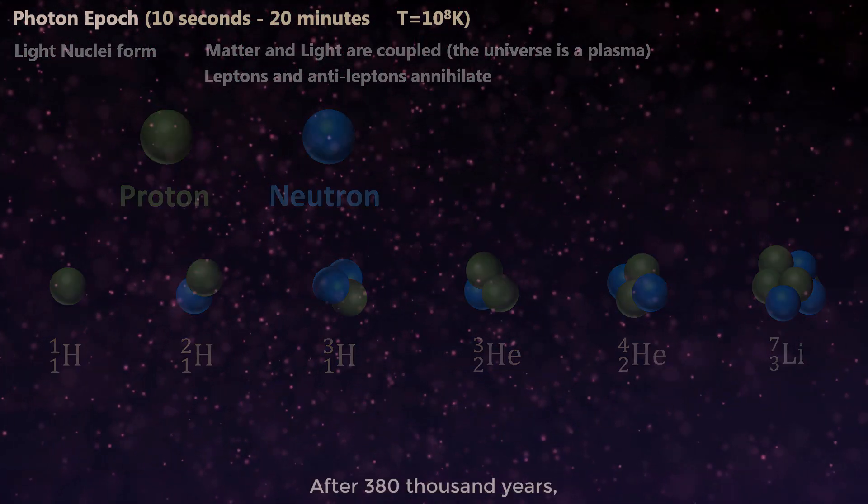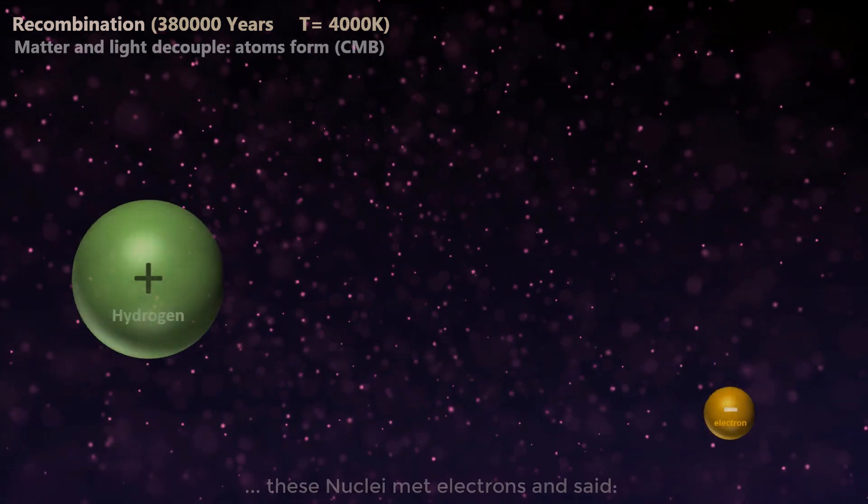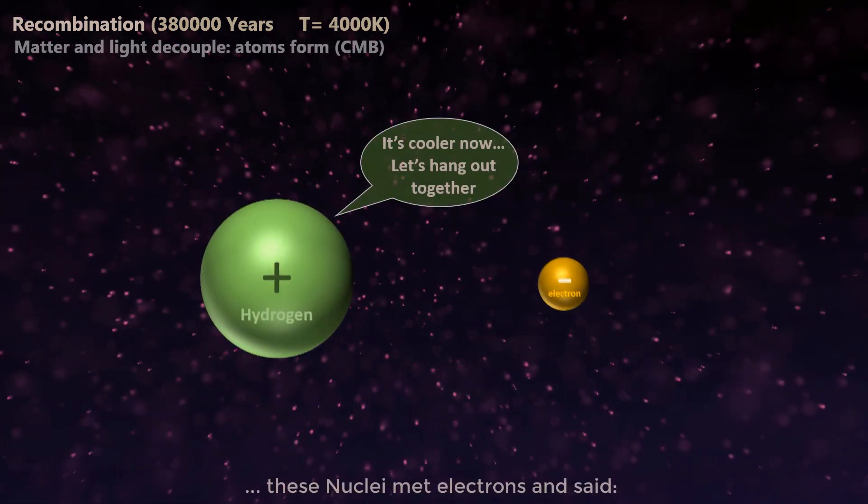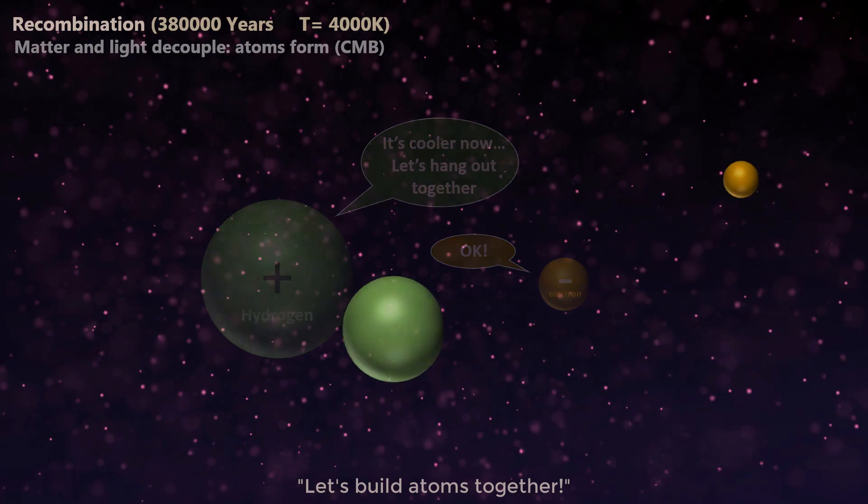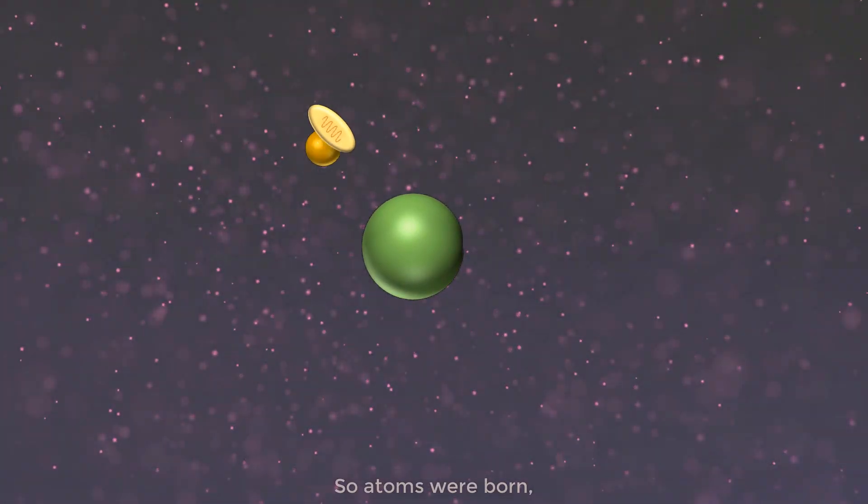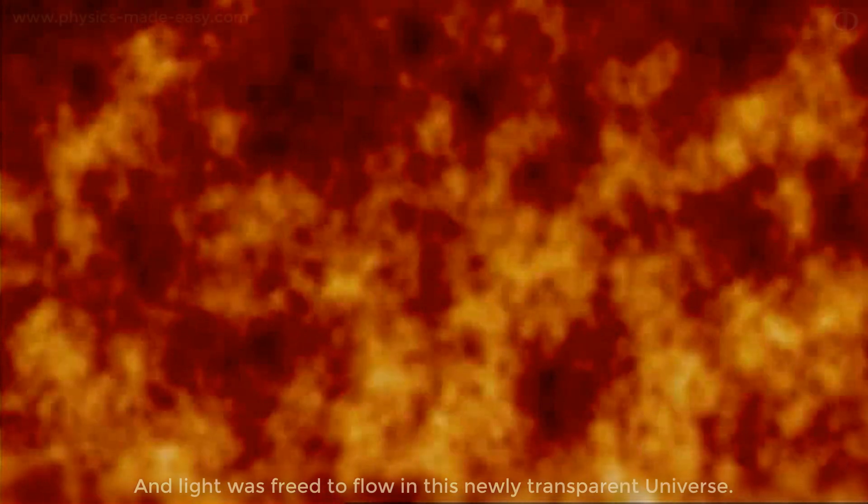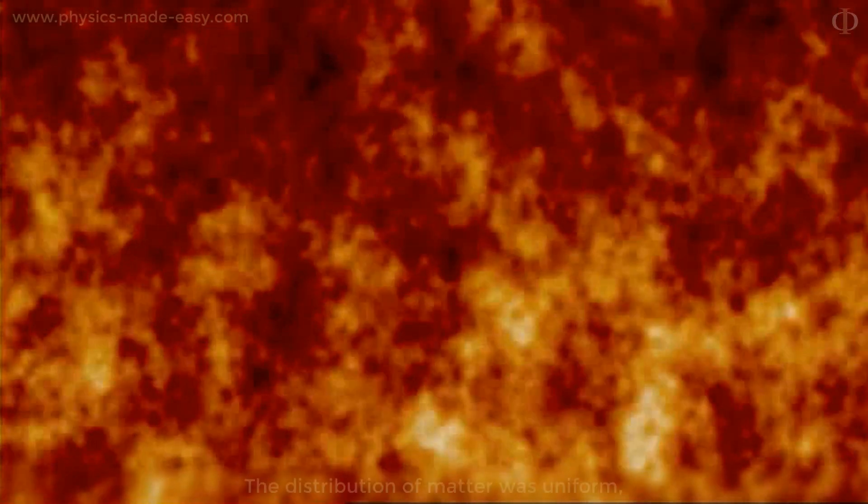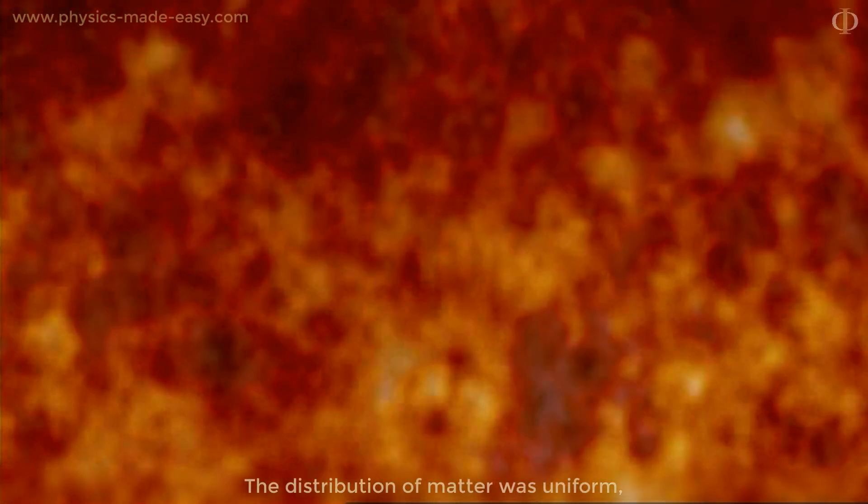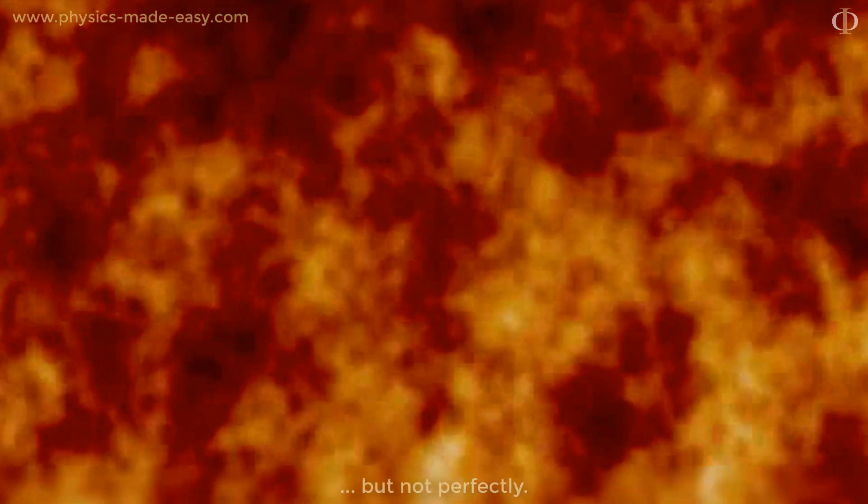After 380,000 years, these nuclei met electrons and said, let's build atoms together. So atoms were born, and light was freed to flow in this newly transparent universe. The distribution of matter was uniform, but not perfectly.